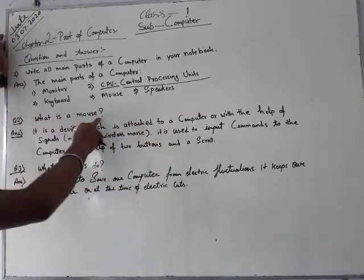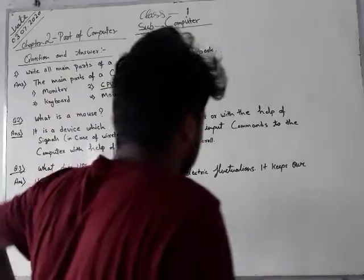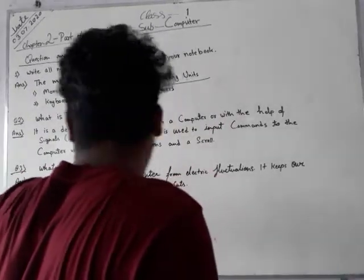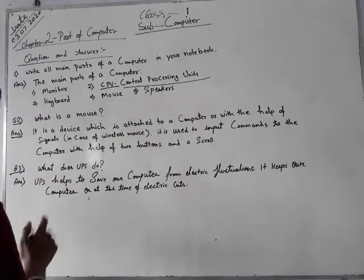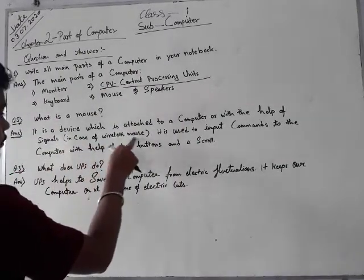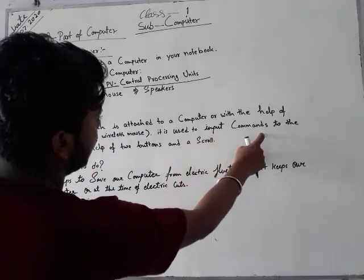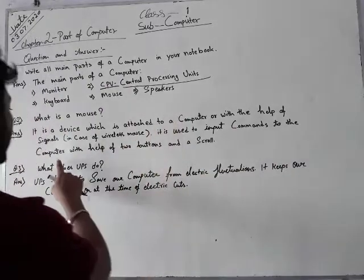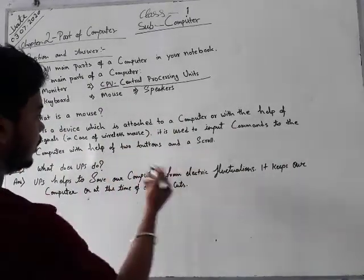Then second question: what is a mouse? It is a device which attaches to a computer or with the help of signal in case of the wireless mouse. It is used to input commands to the computer with the help of two buttons and a scroll.